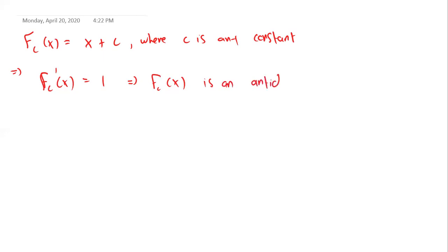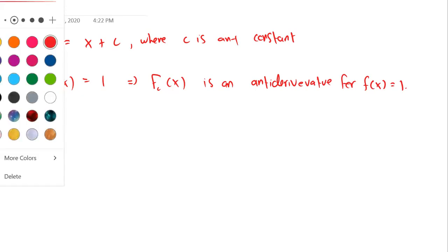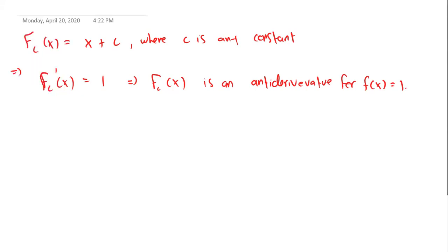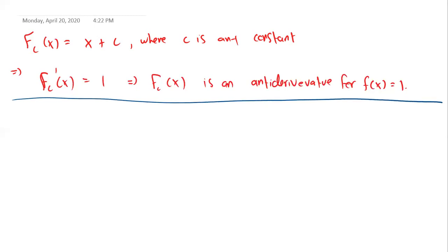There's definitely more than one antiderivative for any function, because you can always just add a constant. When you take the derivative of that constant it always equals zero — that's why this works. This is an important thing to know: if you have any antiderivative and you add a constant, that function is still an antiderivative of the original function.